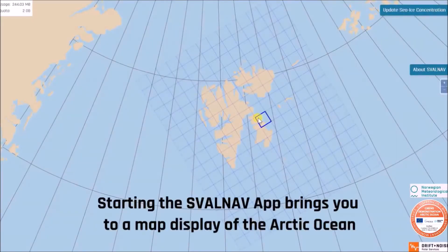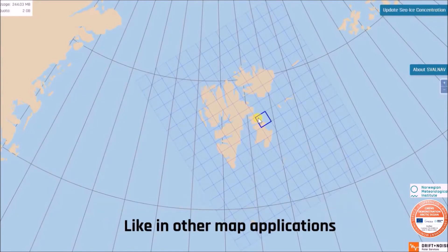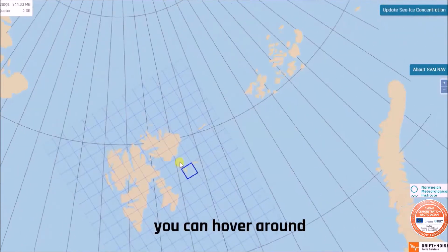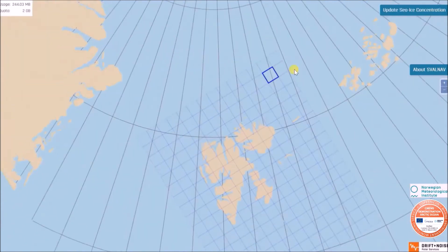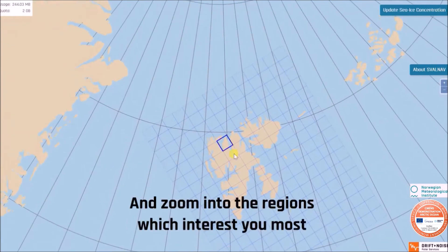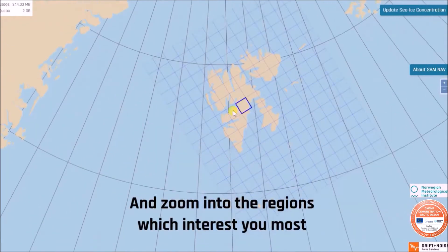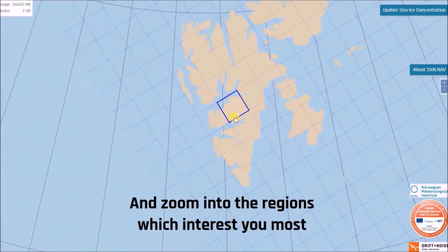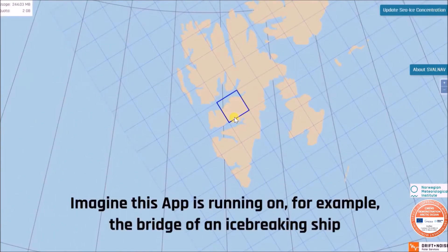Starting the Swanoff app brings you to a map display of the Arctic Ocean. Like in other map applications, you can hover around and zoom into the regions which interest you most. Imagine this app is running on, for example, the bridge of your icebreaker vessel.